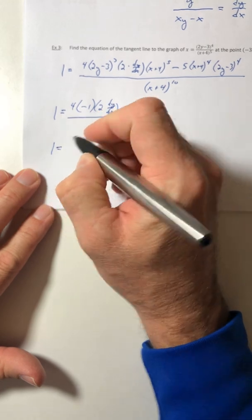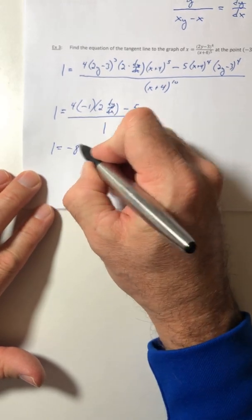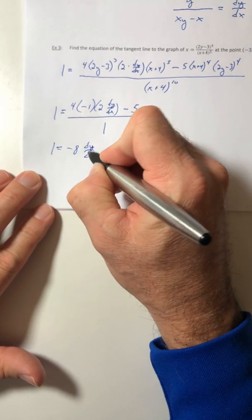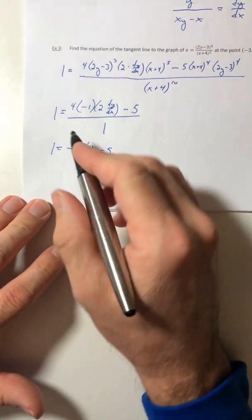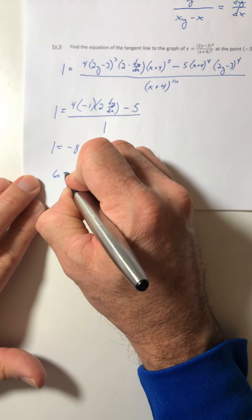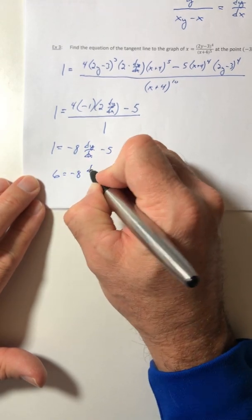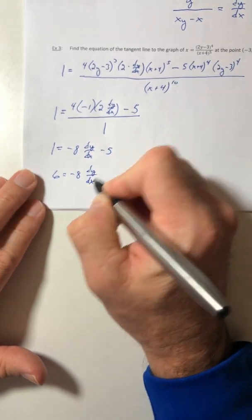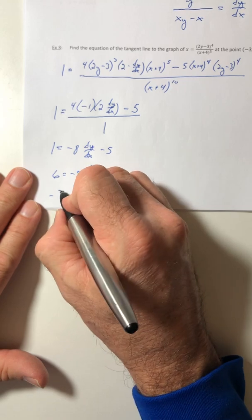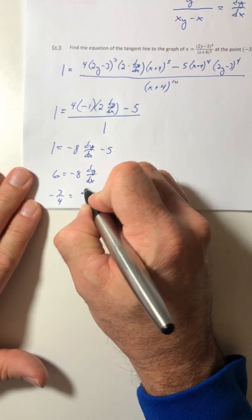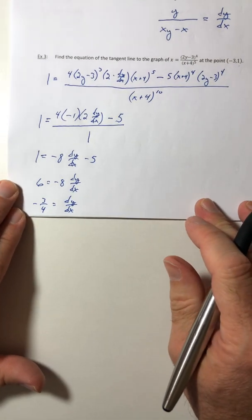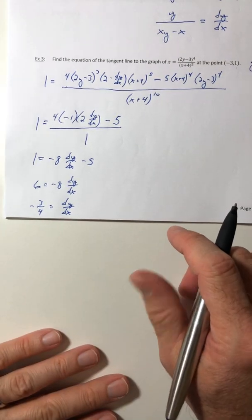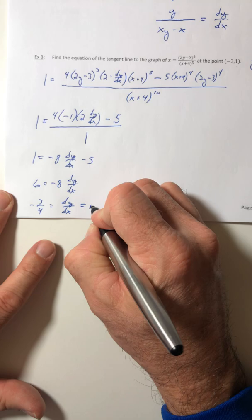Because really what you're solving for is 1 is equal to negative 8 dy/dx minus 5. So add over the 5, divide by negative 8, and your dy/dx is a negative 3 fourths. Okay, so that is your slope.